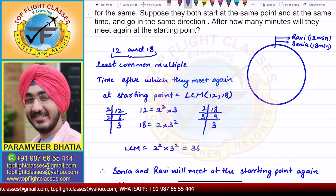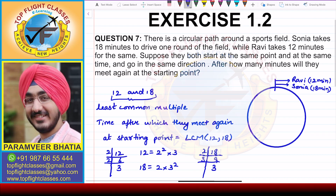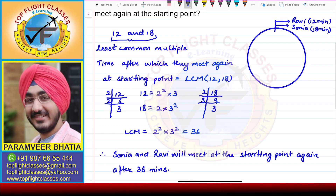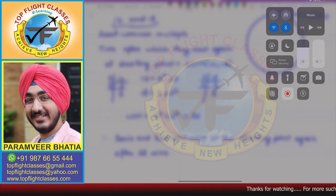To summarize: when we need a number smaller than two given numbers, we find the HCF; and when we need a number larger than or a common multiple of two given numbers, we find the LCM. In this case, we found the LCM, which came out to be 36 — so they will meet at the starting point after 36 minutes.